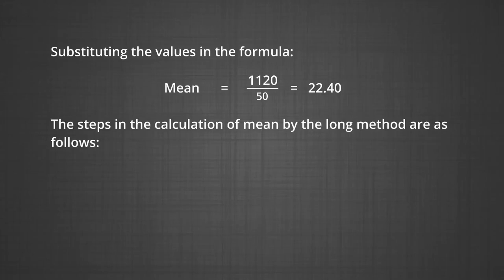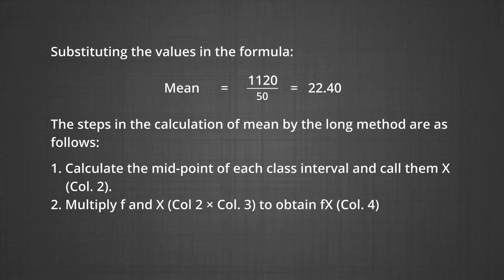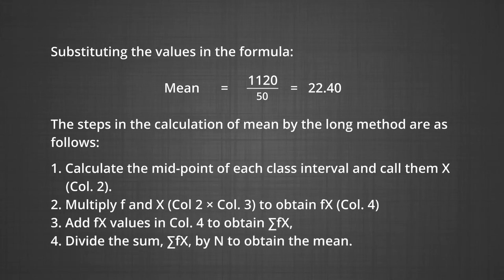The steps in the calculation of mean by the long method are: Number 1, calculate the midpoint of each class interval and call them x. Number 2, multiply f and x to obtain fx. Number 3, add the fx values to obtain sigma fx. Number 4, divide sigma fx by n to obtain the mean.